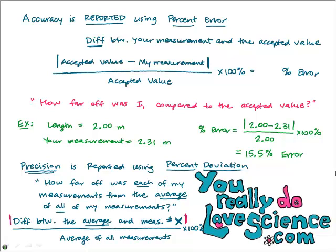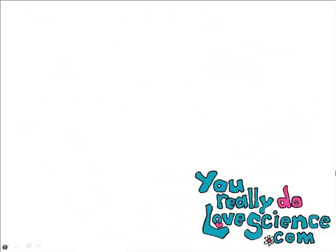Note the absolute value signs in the equation because you don't want a negative percent deviation. You get the difference between the average measurement and each individual measurement, divide by the average of all measurements, then multiply by 100. For example, let's say you're measuring how long it takes for something to fall. Trial one: 0.86 seconds. Trial two: 0.92 seconds. Trial three: 0.94 seconds — just a matter of how quickly your hand could operate the stopwatch for the same object falling the same distance.